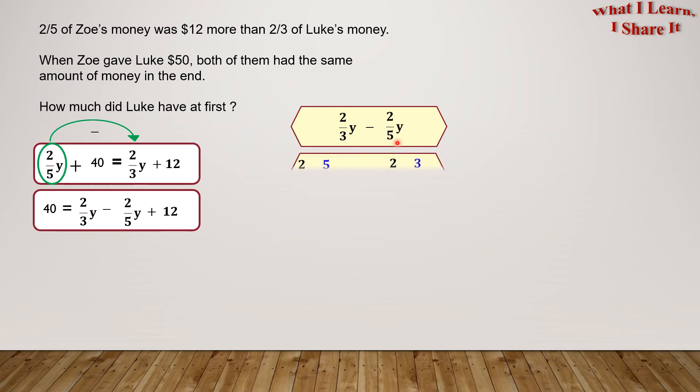So let's multiply 2/3 by 5/5. And let's multiply 2/5 by 3/3. Now look, 2 times 5 equals 10, and 3 times 5 equals 15, and 2 times 3 equals 6, and 5 times 3 equals 15. Now the denominators are the same. So let's solve it. 10 minus 6 equals 4, and the denominator stays the same. So the answer is 4/15Y. Let's put it back in the main equation.